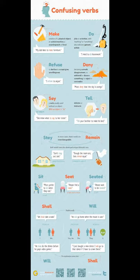Make: this verb is used when creating a physical object, an action or reaction, a sound or speech, or food. For example, my dad likes to make furniture. Do: on the other hand, is used for jobs or activities, with anything or something, and it also indicates generic actions. For example, I need to do housework.